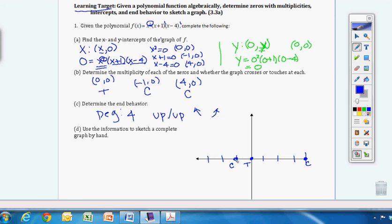So now for my two end points, I know this is going to travel up. And this will also be going up. And I want to cross through the x-axis. I want to touch and turn. And then go down and cross through over at four. And that is my completed graph by hand.